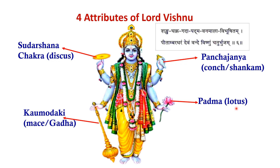In the ancient shlokas also, it has been said: Shankha, Chakra, Gada, Padma, Vanamala, Vibhushitam, Pitambaradhara Devam, Vande Vishnum Chaturbhujam — meaning he is with four arms (bhujas) having four attributes.